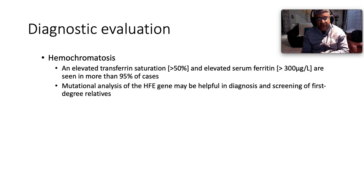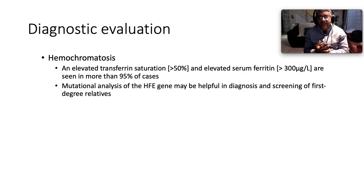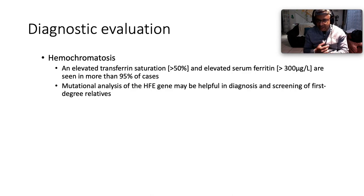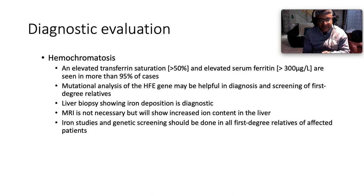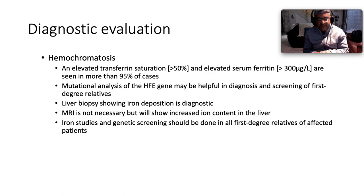For diagnostic evaluation of hemochromatosis, you want to do iron studies: an elevated transferrin saturation above 50% and elevated serum ferritin above 300 micrograms per liter are seen in more than 95% of cases. Mutation analysis of the HFE gene may be helpful in diagnosis and screening of first-degree relatives. Liver biopsy showing iron deposition is diagnostic. MRI is not always necessary but will show increased iron content in the liver. Iron studies and genetic screening should be done in all first-degree relatives.